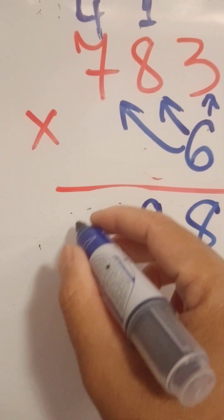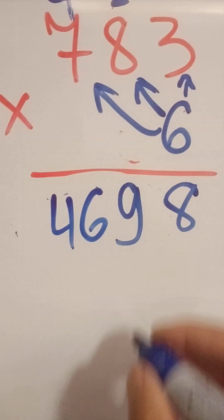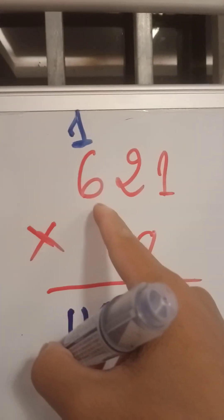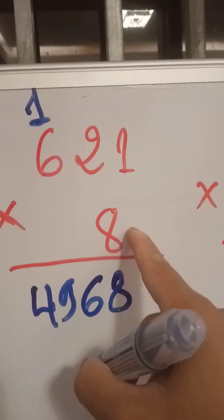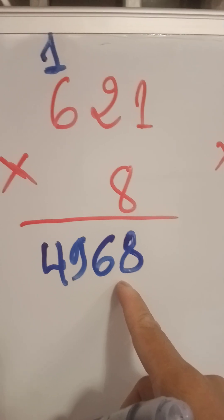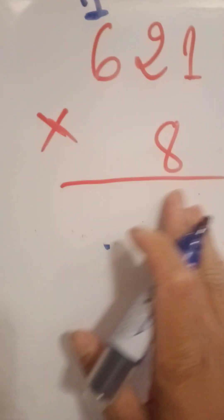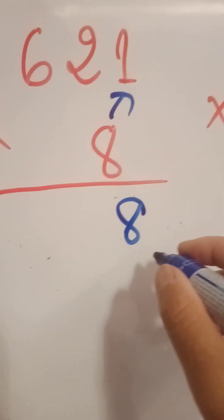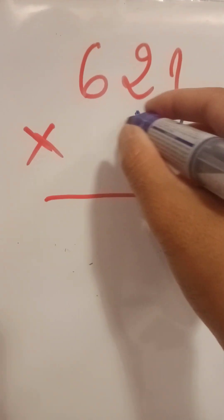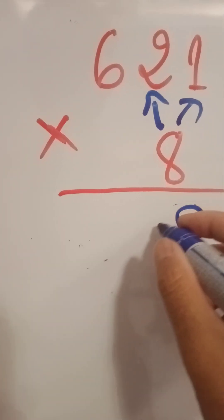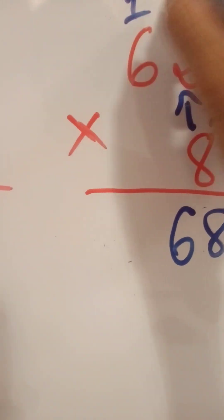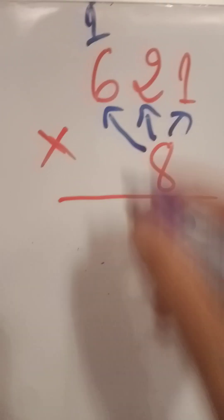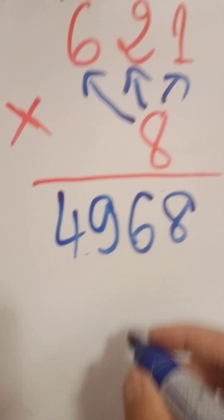So we're done with that. Now 621 multiplied with eight equals 4968. How do we do it? Eight and one is 8. Eight and two is 16 — write 6, keep one. Eight and six is 48, plus one is 49. This answer is correct.